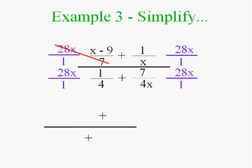Let's see. That's going to cancel. And 28X divided by 7 is 4X. Now I have to multiply the 4X times X minus 9. Both of them.